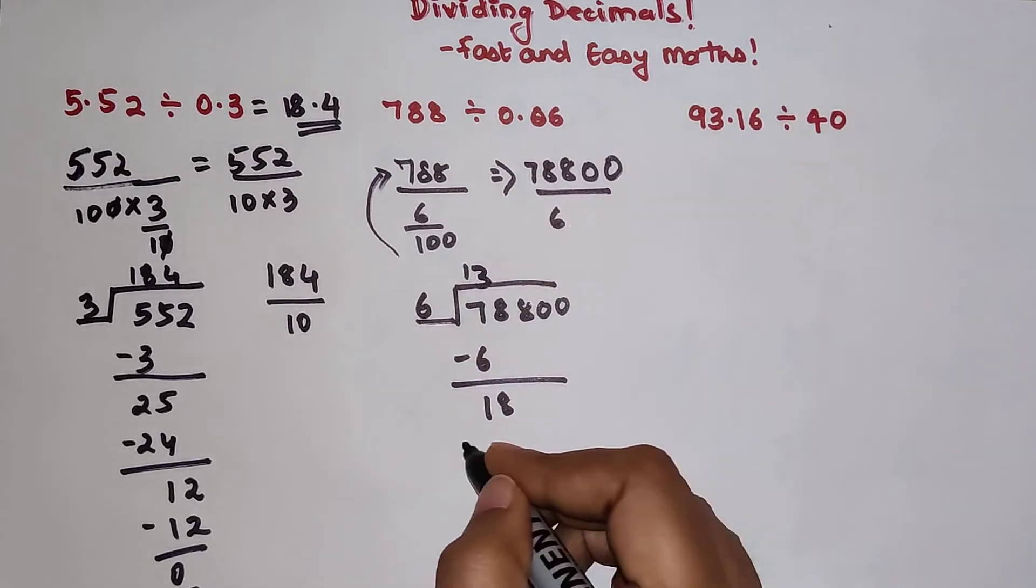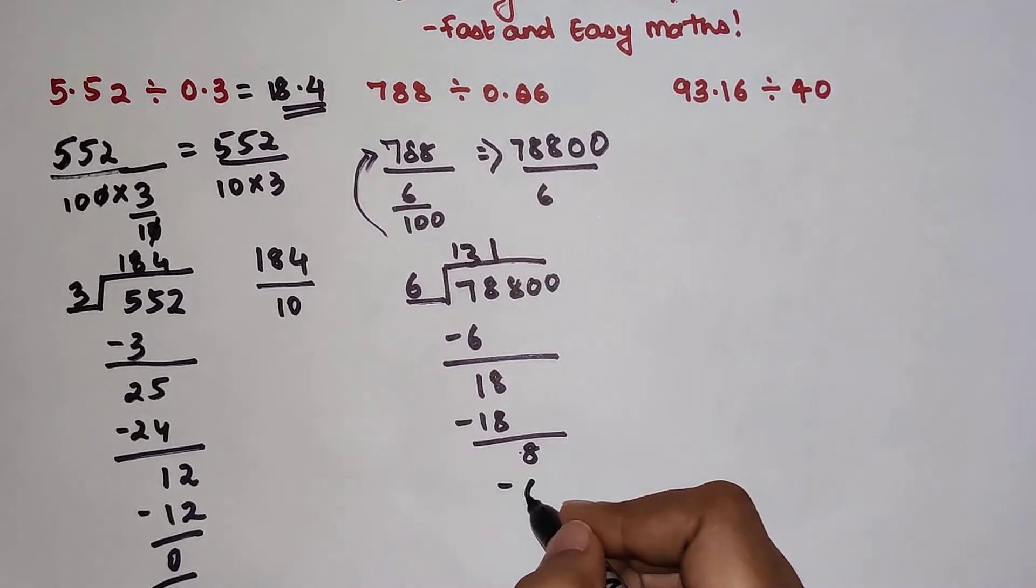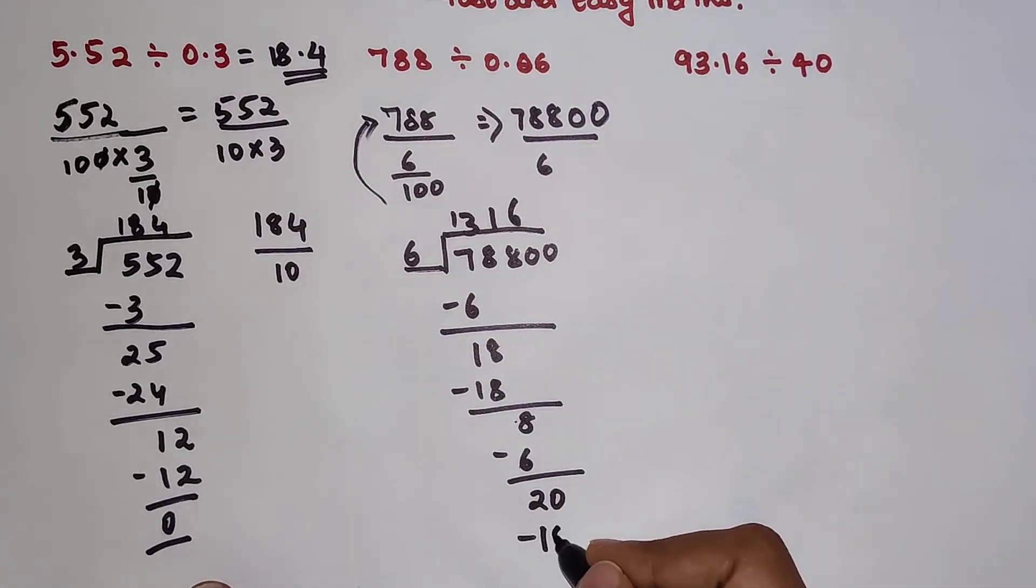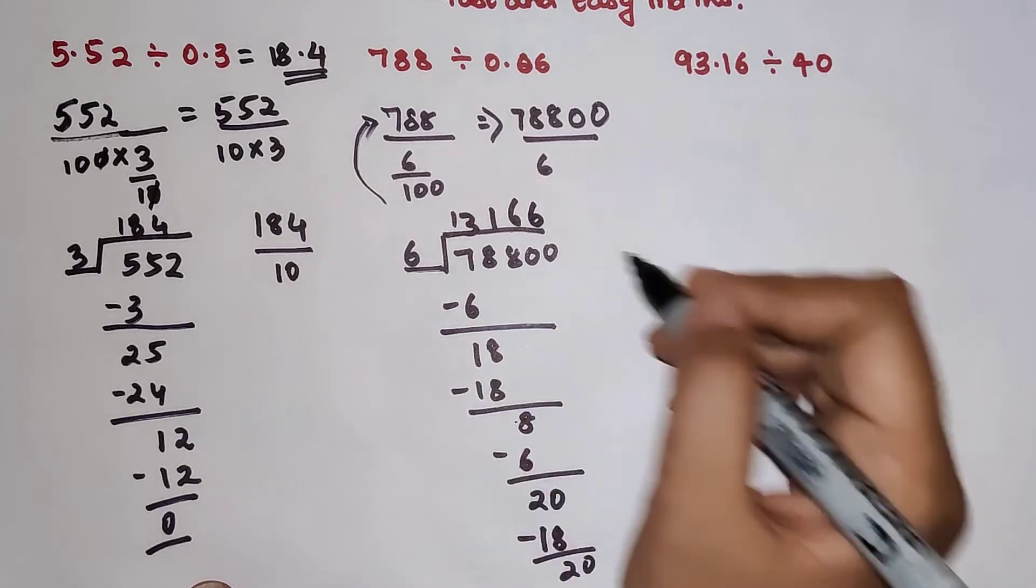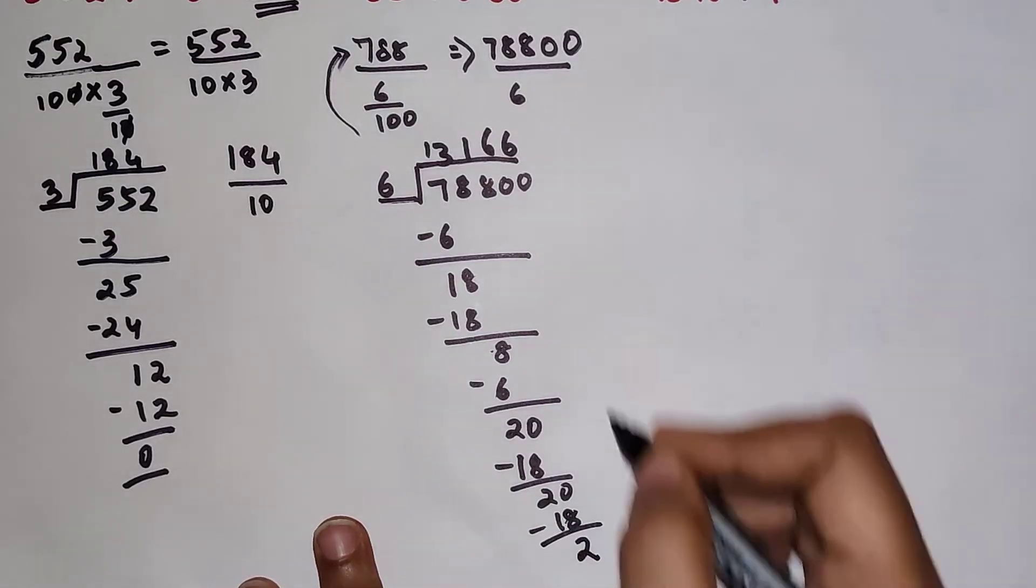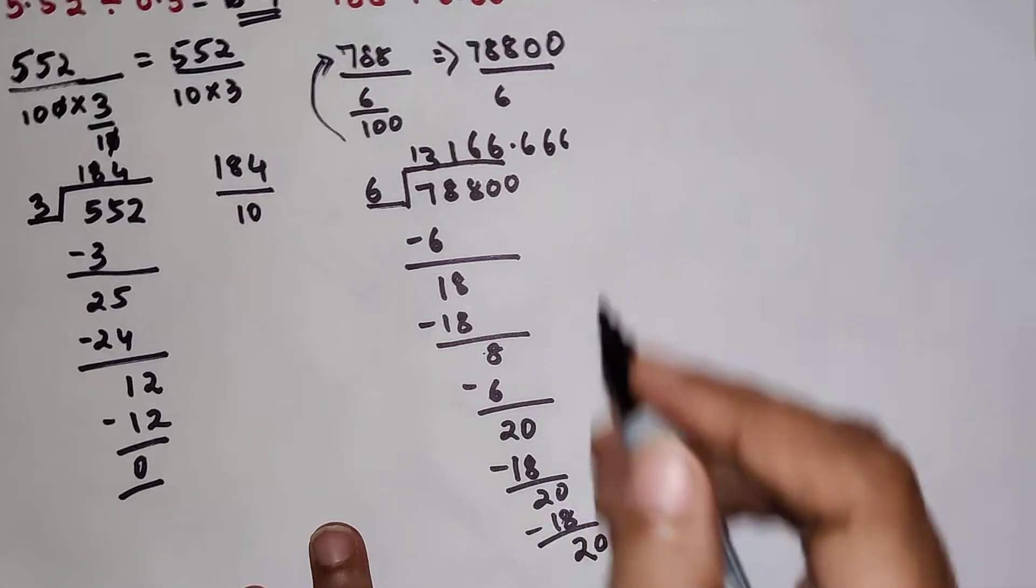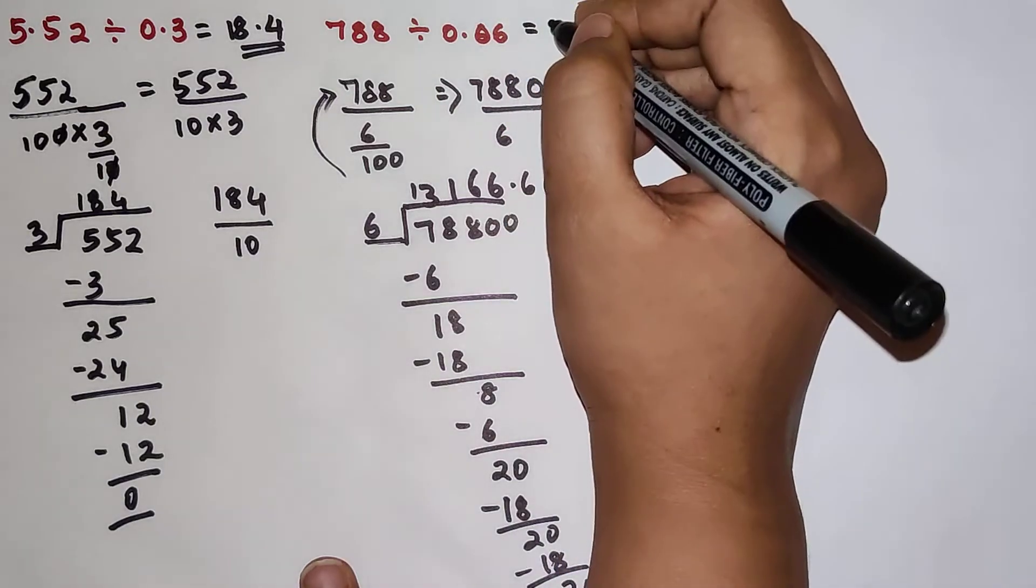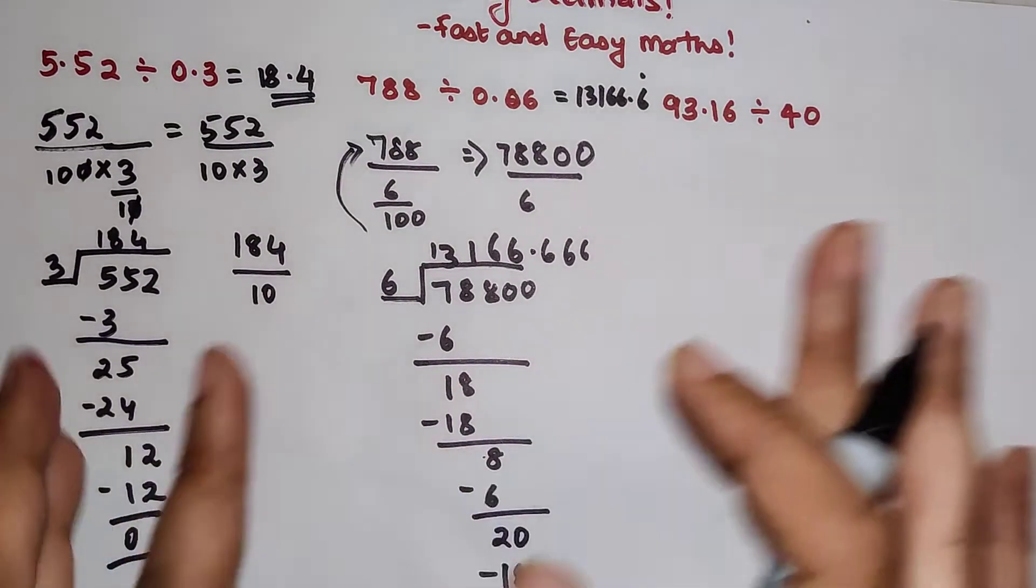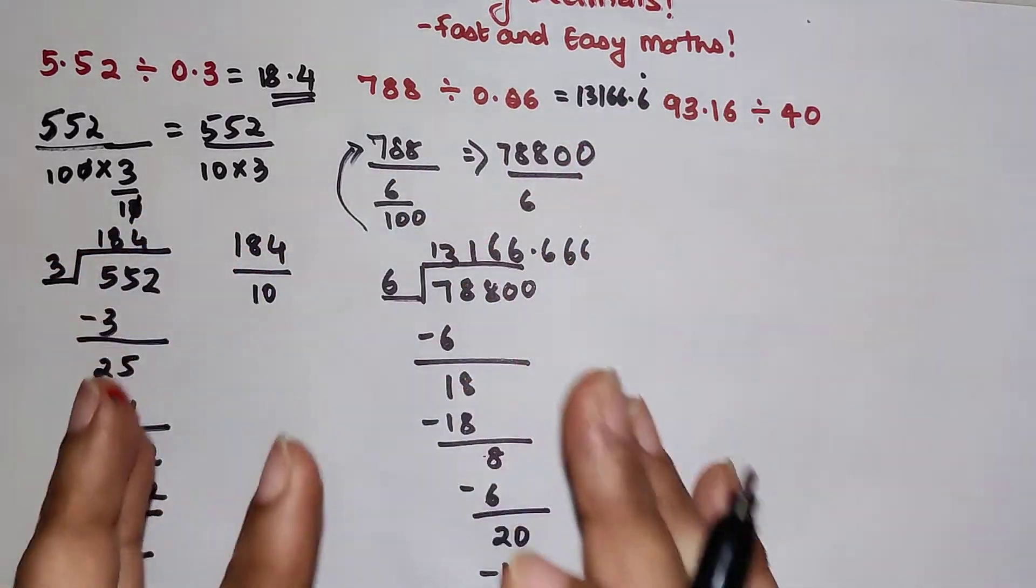So now let's start with the division. We have 78800 by 6. 1 into 6 is 6, 1 into 6, 8 so 3 into 6 is 18. Then this is 0, so let's just take the 8 down. 1 into 6, 2, left with 0, so 6 into 18 is 3. Again we are taking, so I've taken both the zeros, so I'm still left with 2. I'm putting a point and then the 0. This 6 is going to keep recurring. So the answer for your question is 13166.6 recurring.